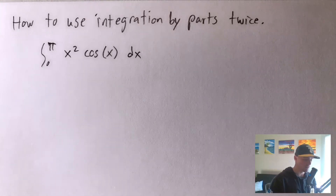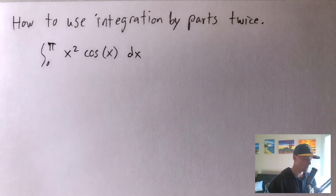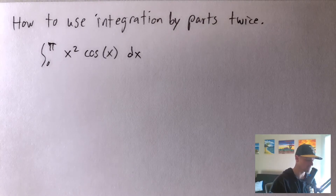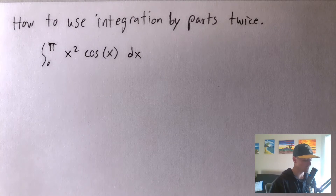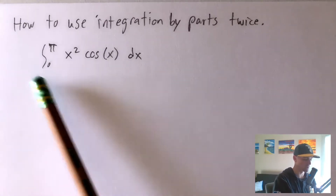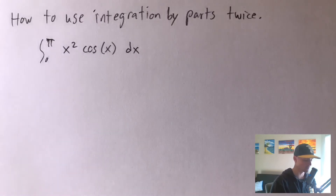Hey guys, Jake here coming at you with another math lesson today. We're going to be going over another integration by parts problem. Specifically, I'm going to show you how to use integration by parts twice in the same problem, and I'm going to show you how to do that using this example here: the integral from zero to pi of x squared cosine x dx.